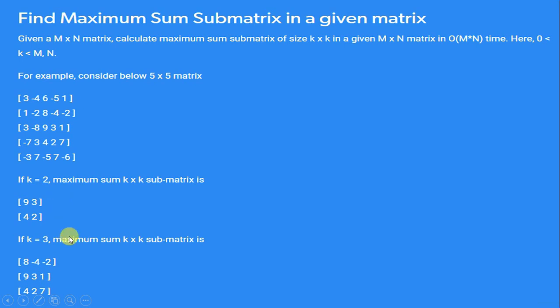Now if k = 3, it means we have to find a matrix of size 3×3. So here it will be our required matrix of size 3×3.